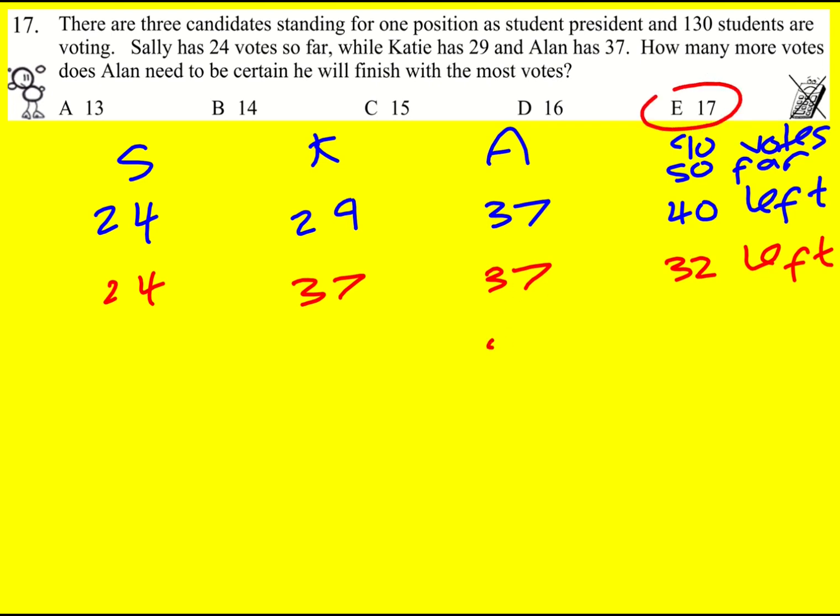So if we add 17 on it's going to be 54 and that would leave 15 for Katie on 52. So 17 definitely needed but Katie cannot then win. That is how I did this question.